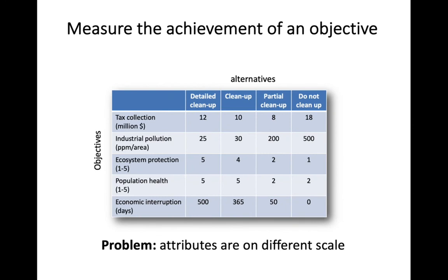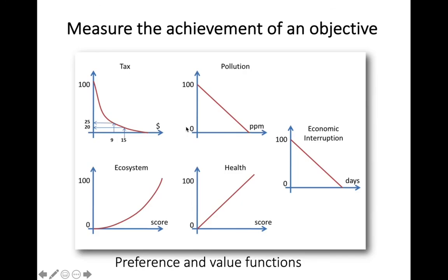We also have a problem: attributes are on different scales — days, a completely unitless scale, parts per million, and dollars. These are all different, so we have to normalize them in some way. What can be done is using a value function. For this particular problem we have tax, pollution, ecosystem, health, and economic interruption, all given functions which relate their natural values to a standardized scale.